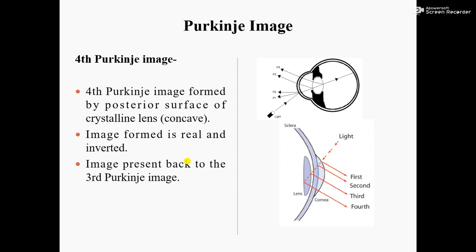The Fourth Purkinje Image is formed by the posterior surface of the crystalline lens. This posterior surface is concave, and because of the concave shape, the image formed is real and inverted. The fourth Purkinje Image is found just opposite to the third Purkinje Image — positioned back to back. Hope you all have understood the Purkinje Images.